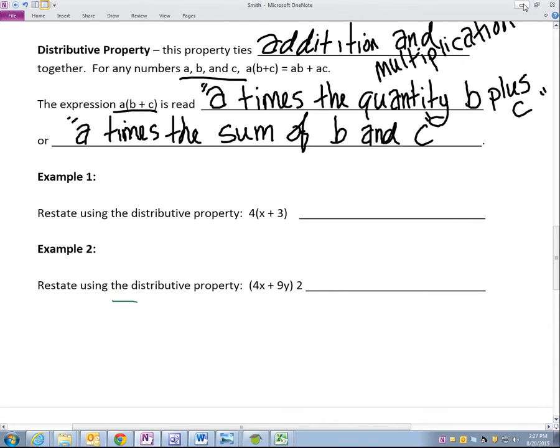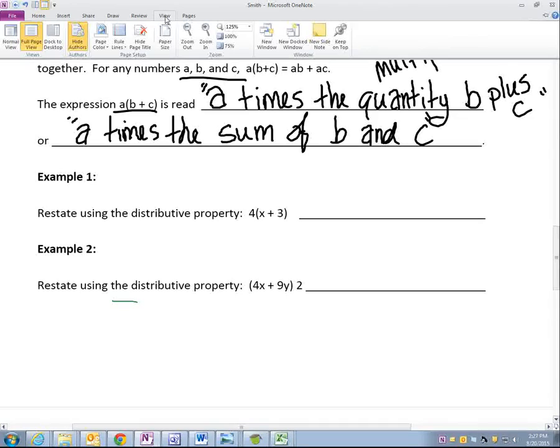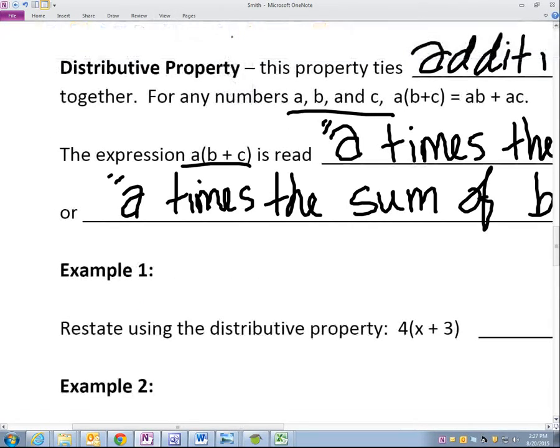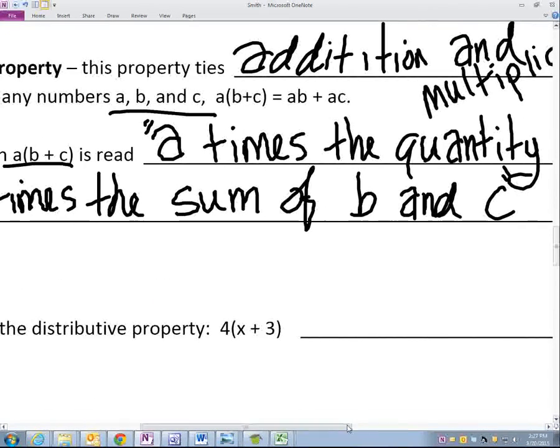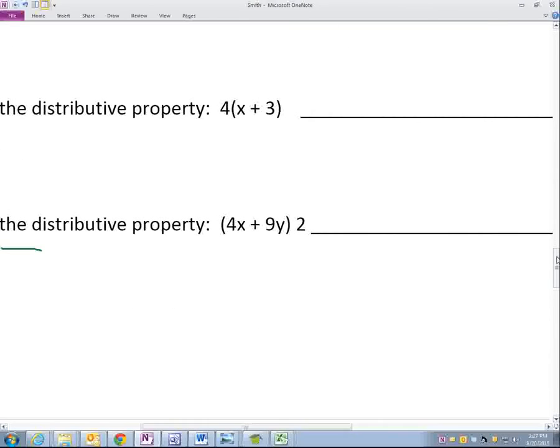Restate using the distributive property. So I'm going to distribute, I'm going to zoom in here. We have four times the quantity X plus three. I need to distribute this four to both of those. Okay, you with me? We need to distribute four to both of those.